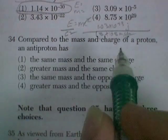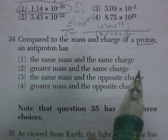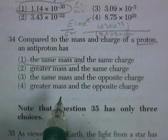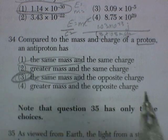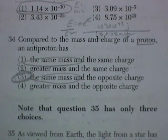Question 34. Compared to the mass and charge of a proton, the antiproton would have the same mass and opposite charge. That's why it's an antiproton, because it's opposite. Everybody knows that.